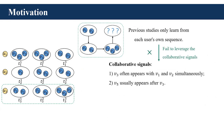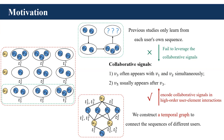However, previous methods only learn from each user's own sequence, and the collaborative signals latent in different users are not explored. As shown in the figure, when predicting the next set for user U3, existing methods only learn from U3's own sequence. If we consider sequences of other users like U1 and U2, we can observe that element V3 often appears together with V1 and V2, indicating strong correlations. And element V5 usually appears after V3, reflecting their sequential order.